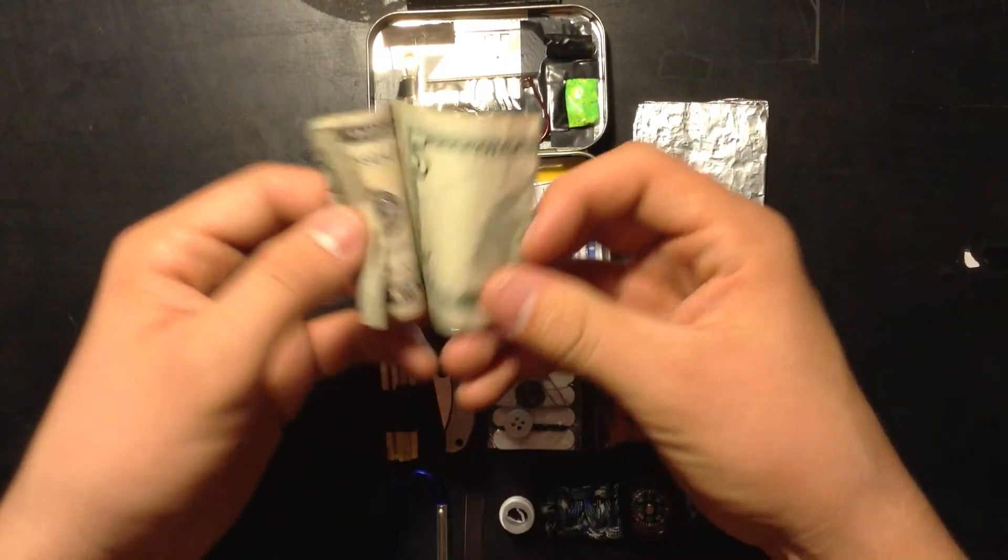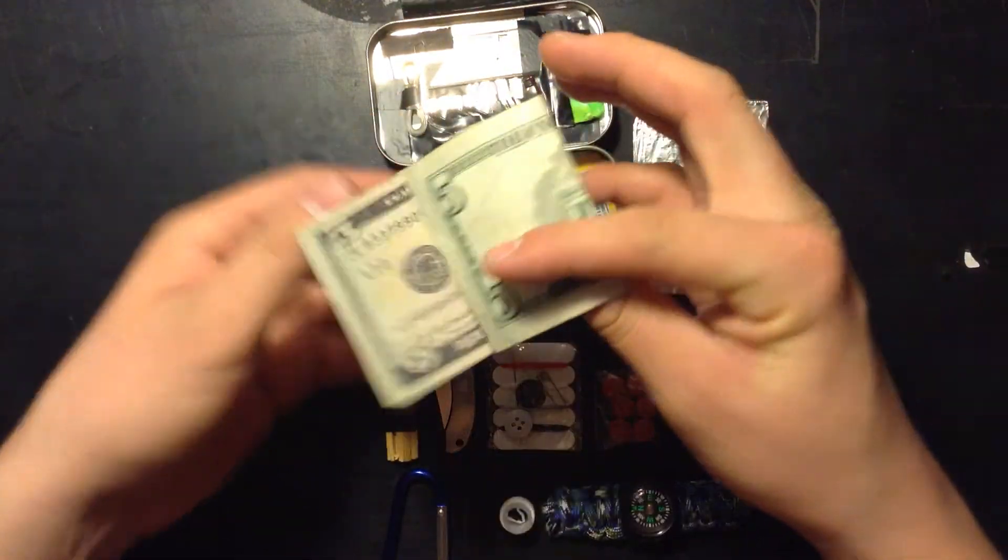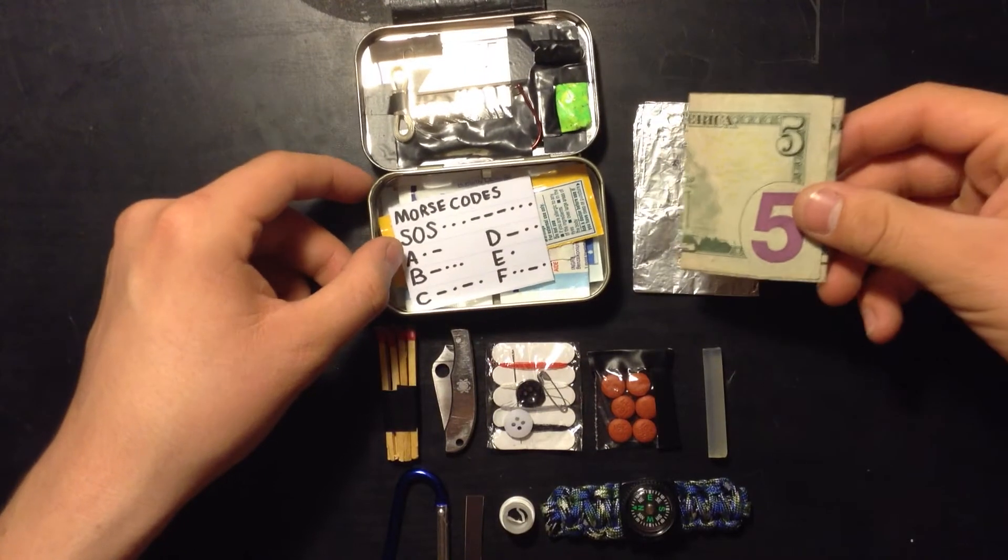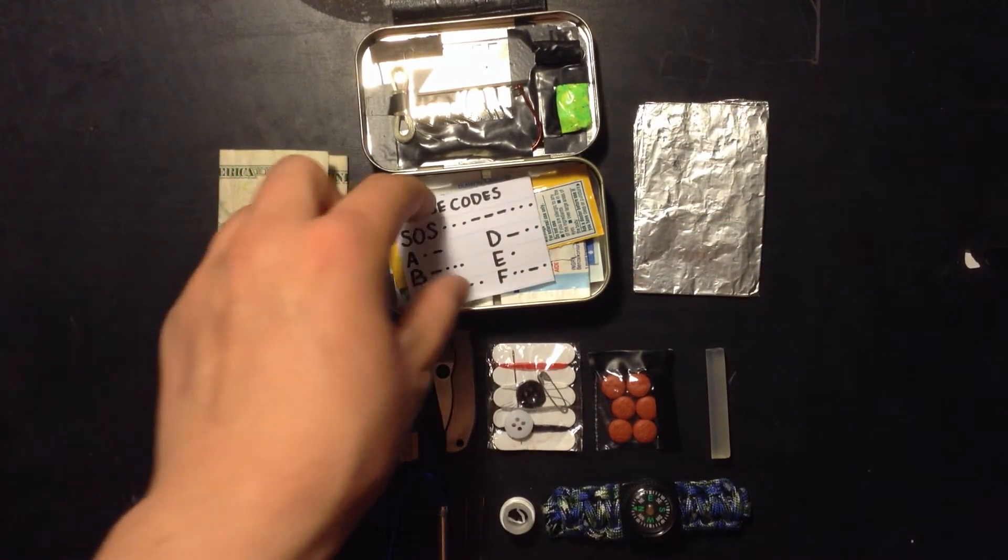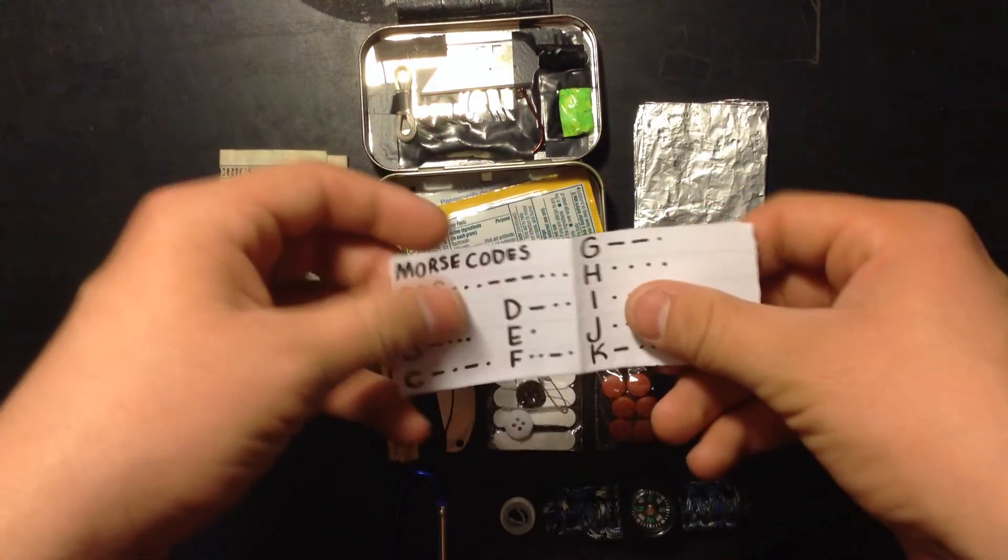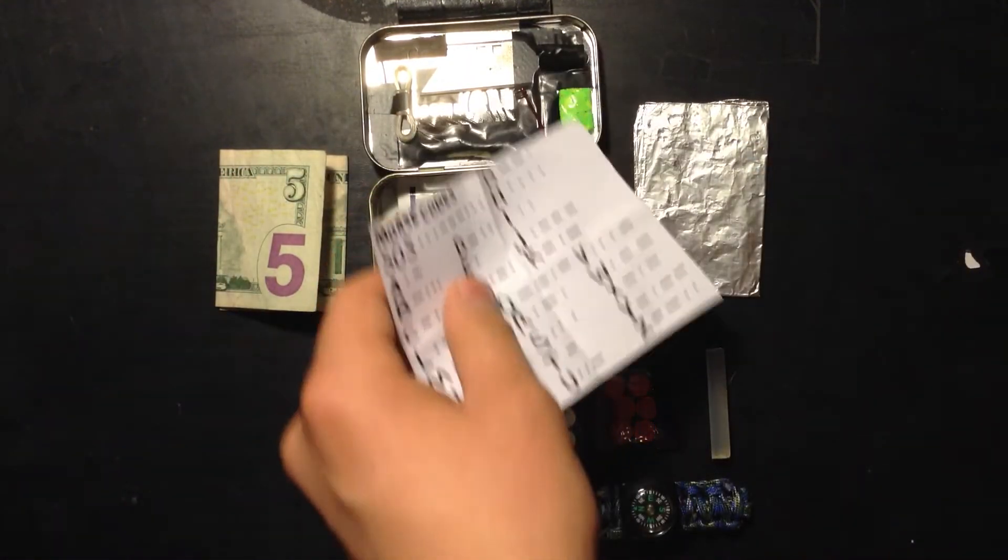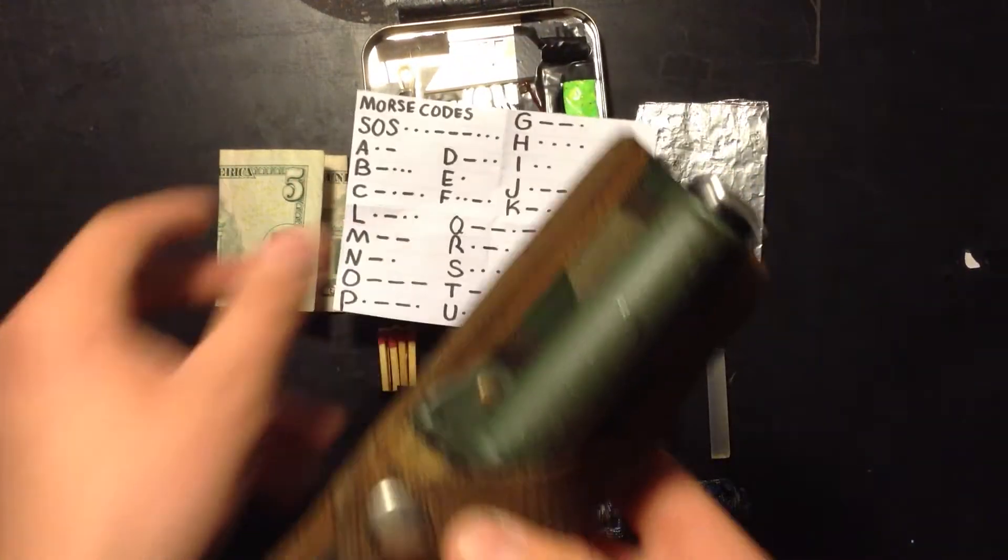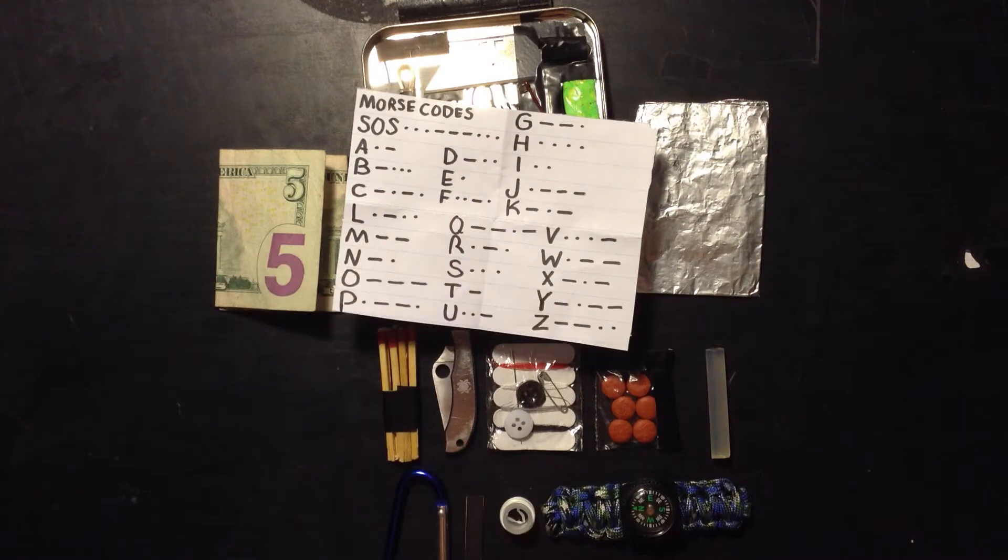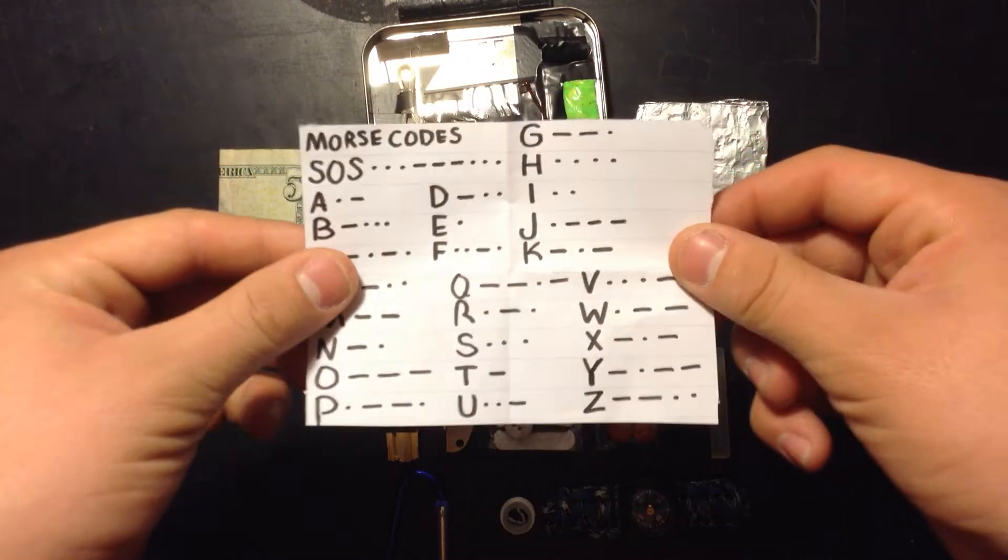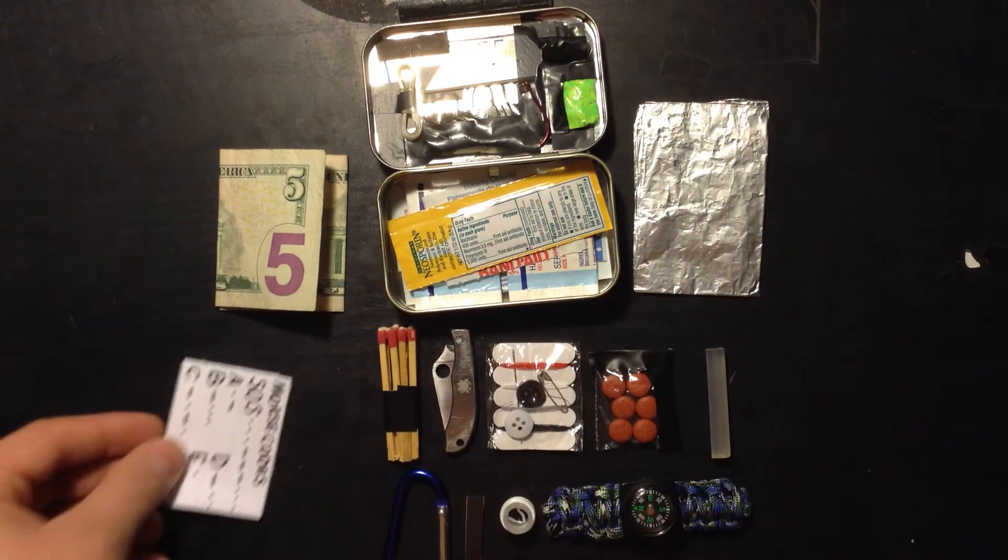I got five dollars, just in case I need to buy something. It's there, it's paper thin. Next, I got Morse codes. My last video, I have a knife that actually has Morse code on it, so I just took what's on this and I added it to this. So I have Morse code on paper. It's paper thin, obviously, so it doesn't take up much room.